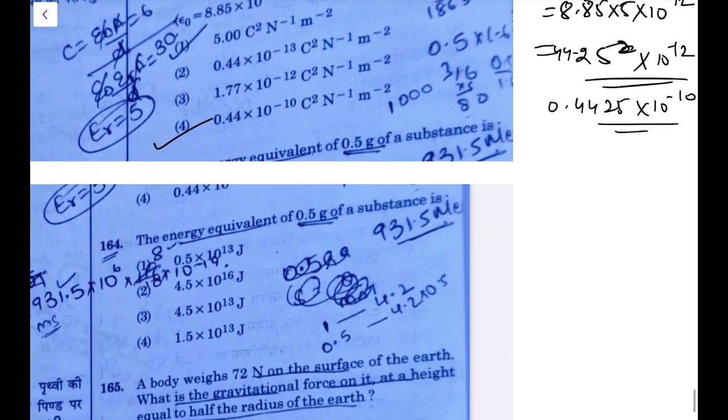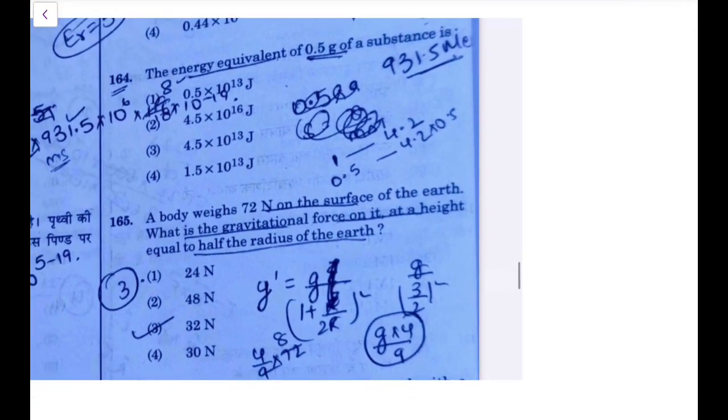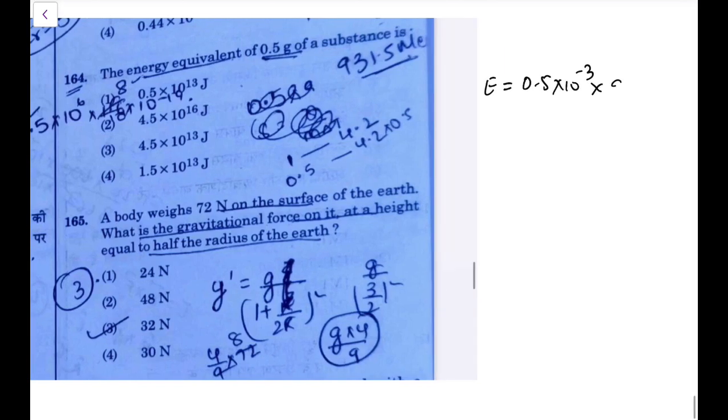Next, the energy equivalent of 0.5 gram of a substance. Energy equivalent of 0.5 gram of a substance would be delta m c square, 0.5 into 10 to the power minus 3 into c square, that is 0.5 into 10 to the power 13 joules. So it is option 3 here.